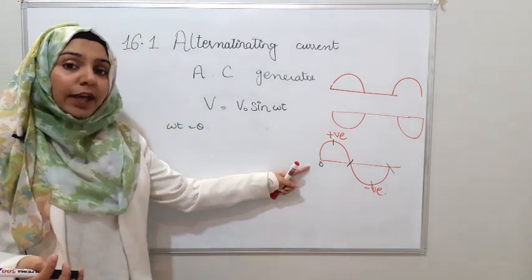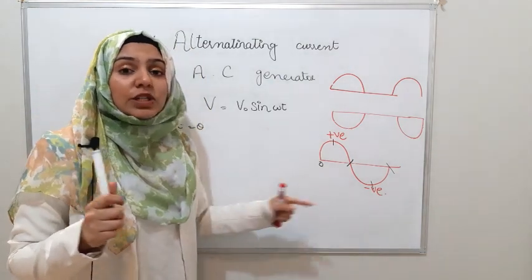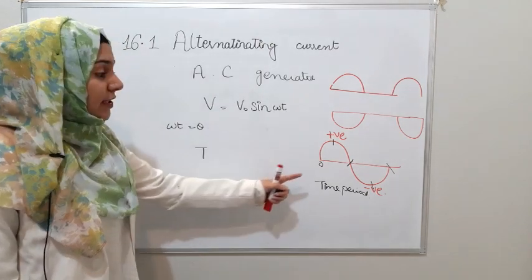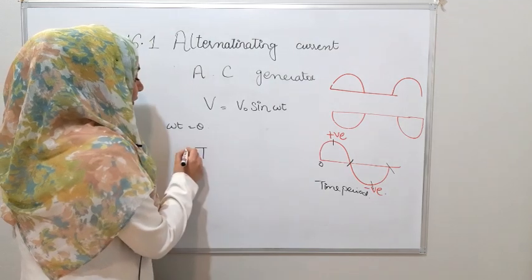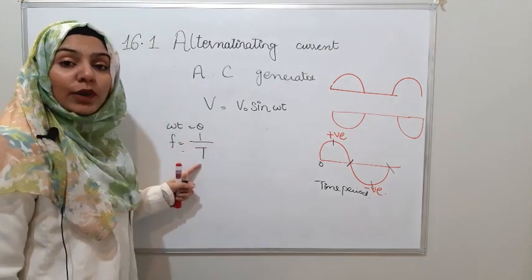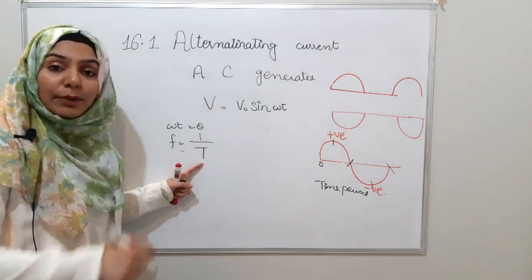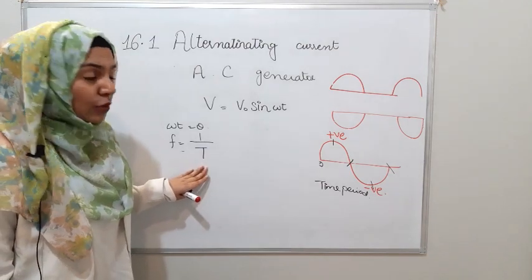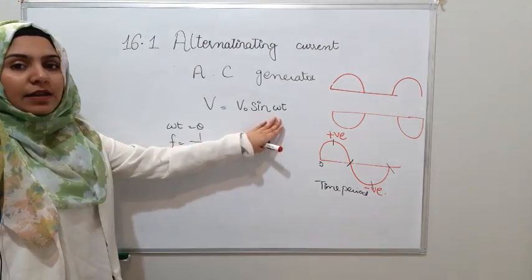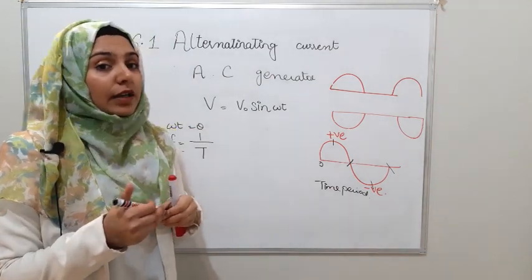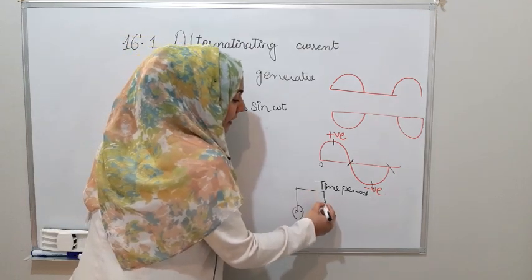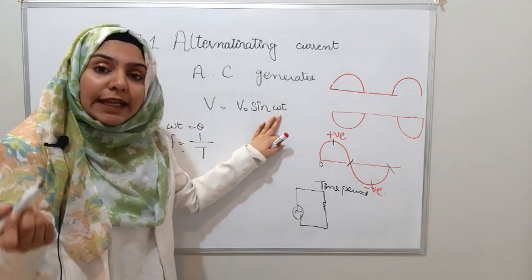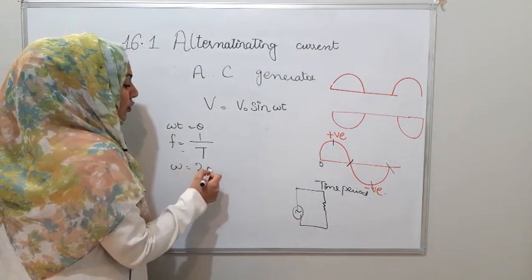We are talking about time period T. Frequency equals 1 over T, meaning the number of waves passing per second is called frequency. So if we consider the time period, the frequency is also available. Since we had angular frequency ω in our equation, we need to convert it to linear frequency using ω = 2πf.